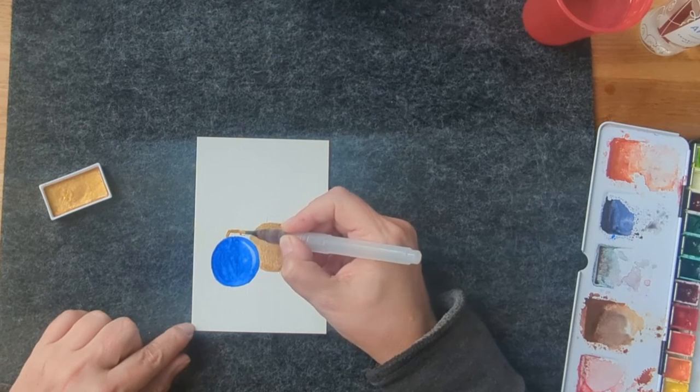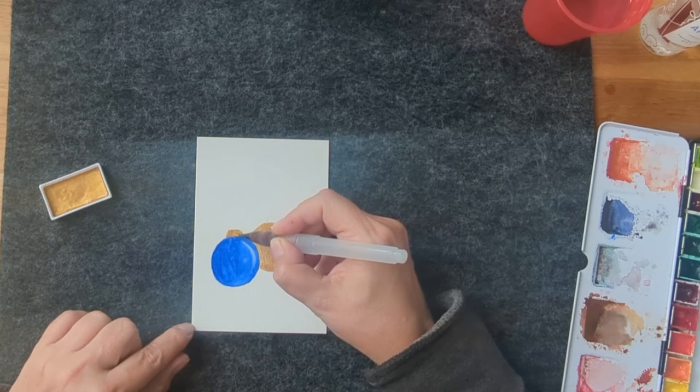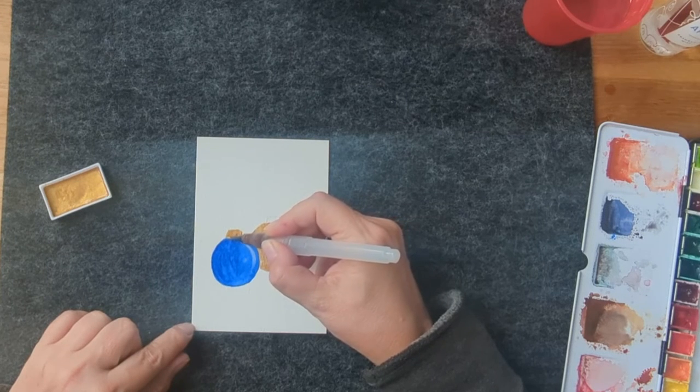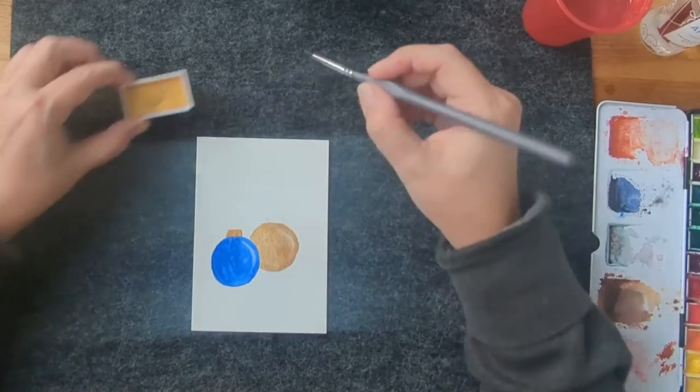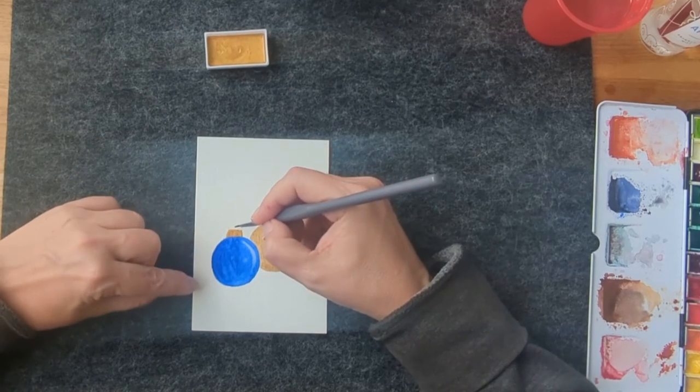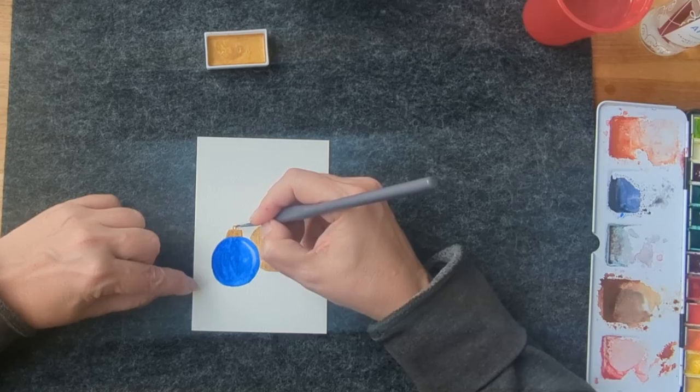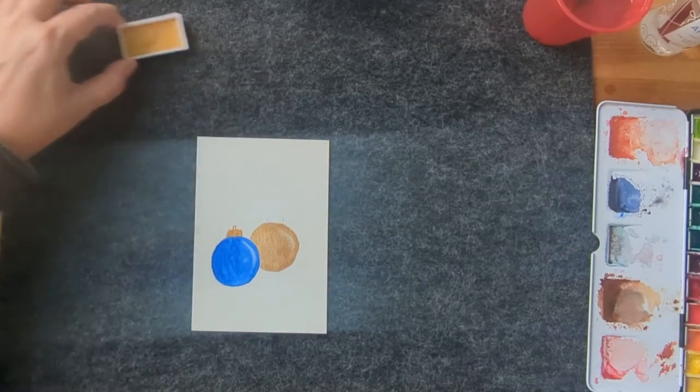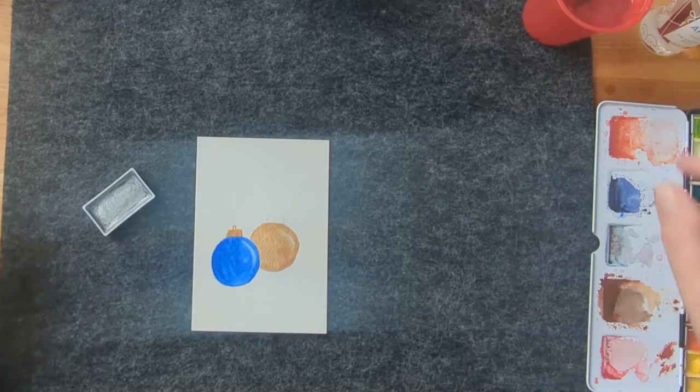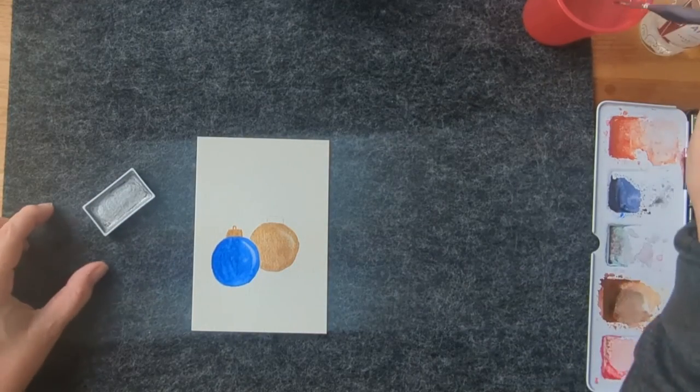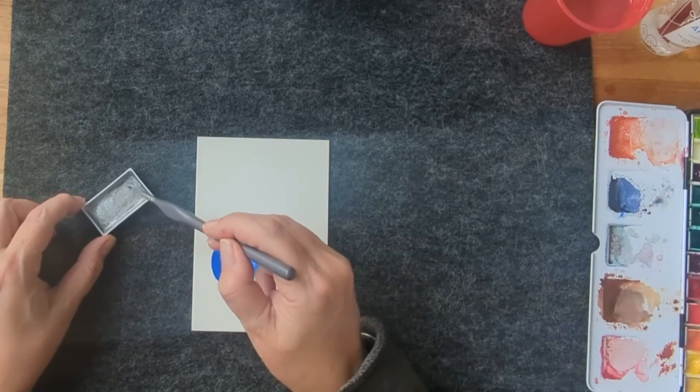Now I am painting the hangers, one in gold and one in silver. The silver is the same cheap color I bought at a craft store.